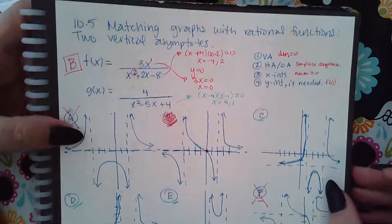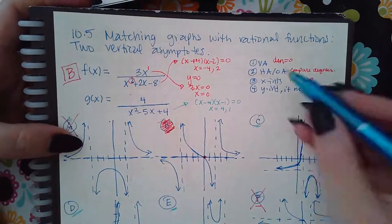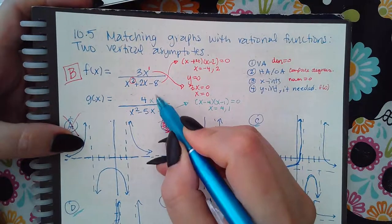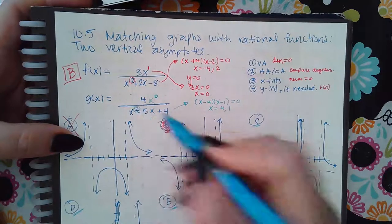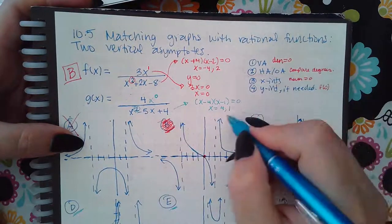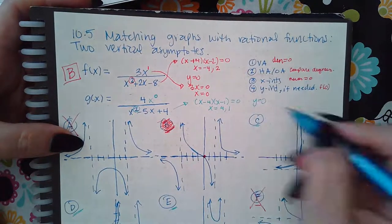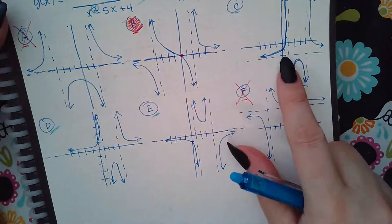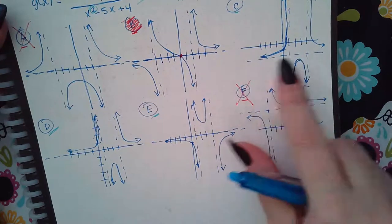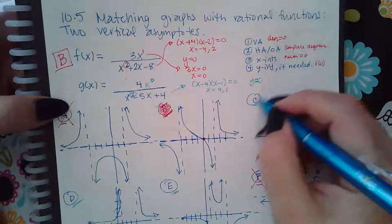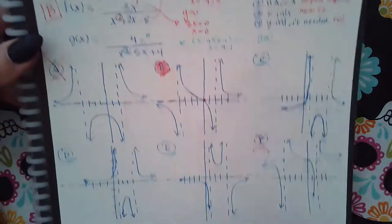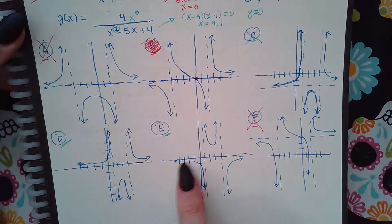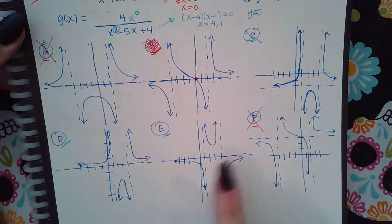The next step is the horizontal or oblique asymptote. The degree of the numerator is zero and the degree of the denominator is two — when the top degree is smaller, the horizontal asymptote is automatically y equals zero. Looking at C, the horizontal asymptote is at negative one, so C is eliminated. For D and E, the horizontal asymptote is at zero, so we're still good with both D and E.